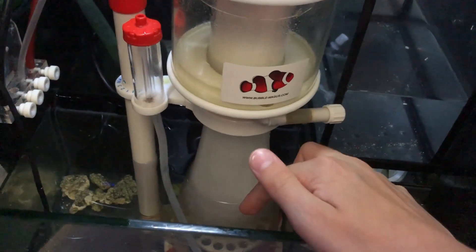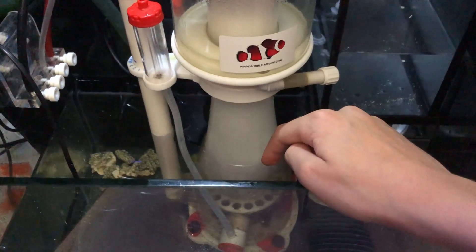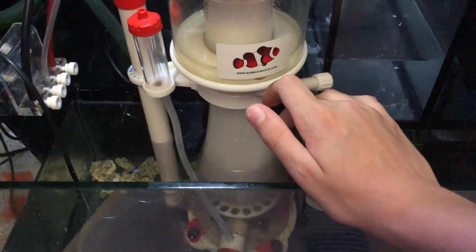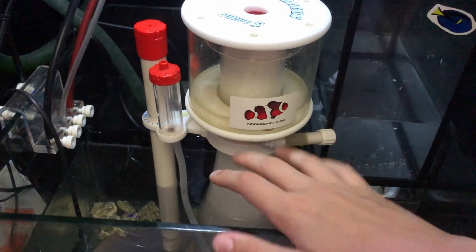And then there'll be an air pump type thing which draws in air here. When the bubbles are being generated, they pick up little bits of waste that is in the aquarium, which then rises up and pops at the top and falls into this collection cup.